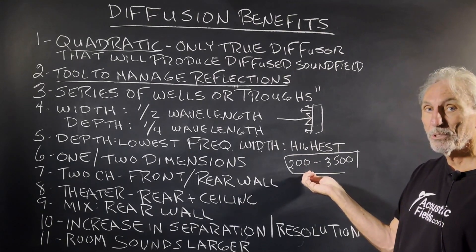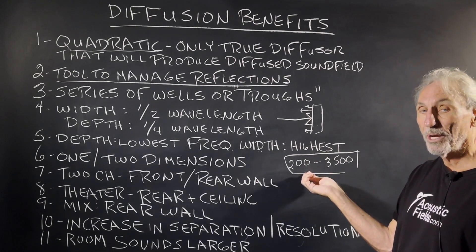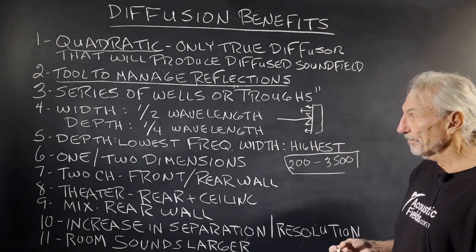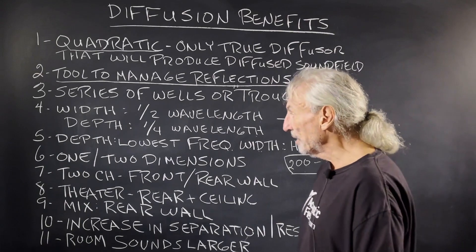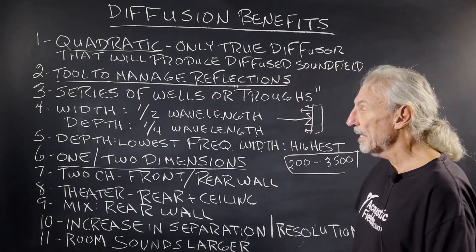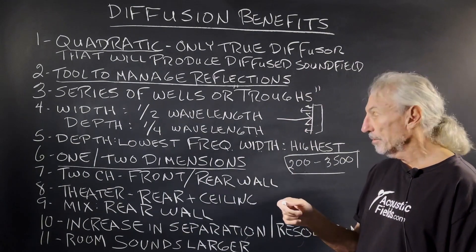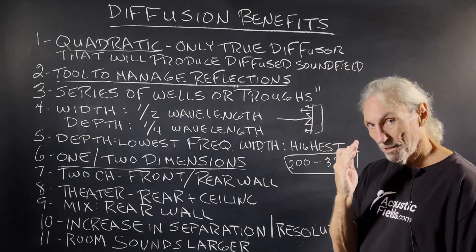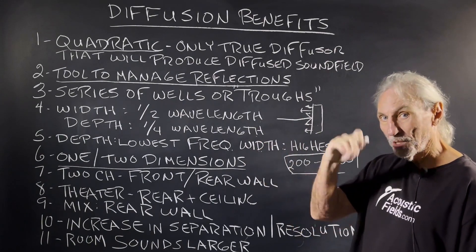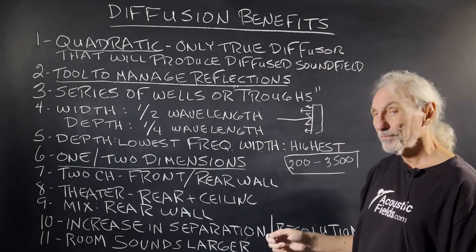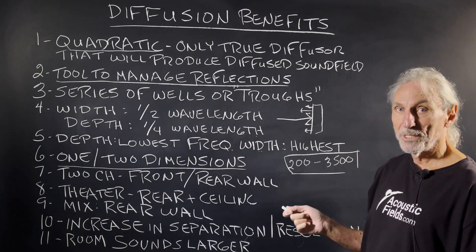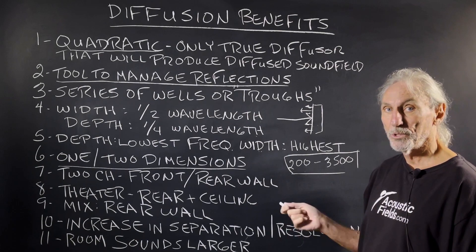We built some diffusers a couple of years ago where the client wanted to go down to 100 cycles — 36 inches deep, a lot of space. There's one kind of diffusion — quadratic — but we can orient it in a one or two-dimensional pattern. One dimension is vertical slots. Two dimensions is both vertical and horizontal. When to use which depends on distance, room usage, and your objectives.